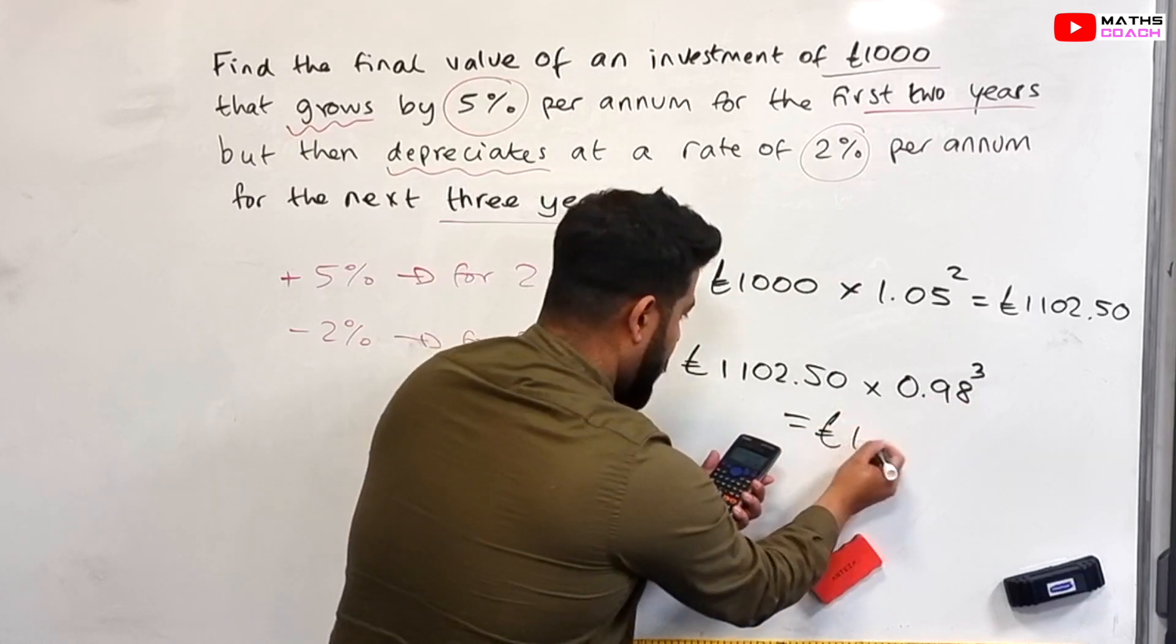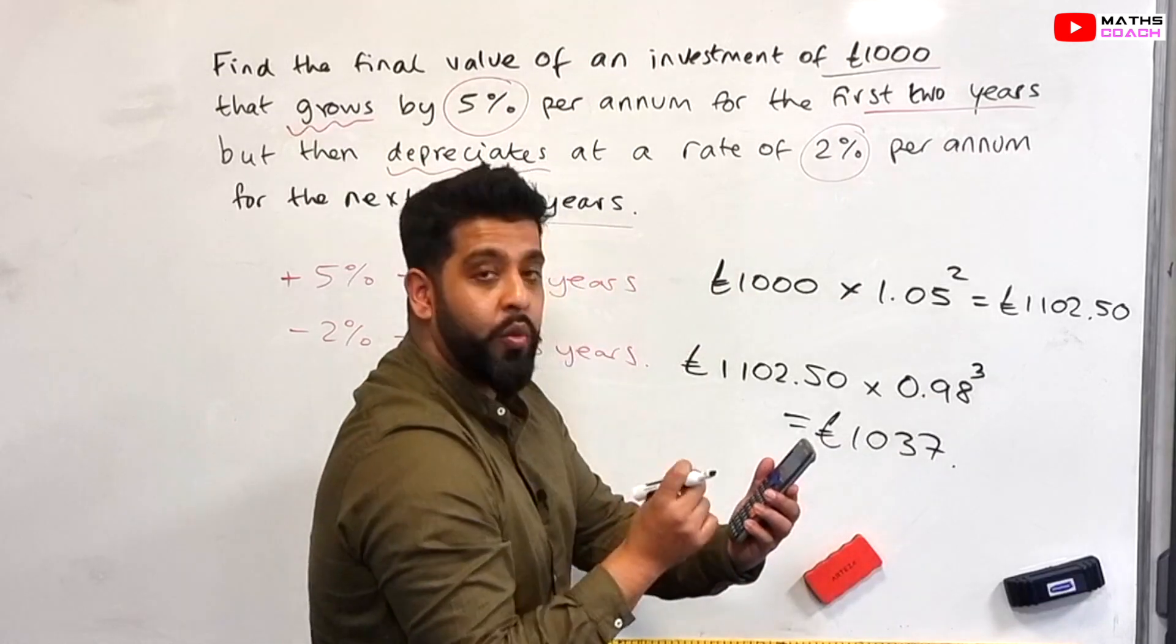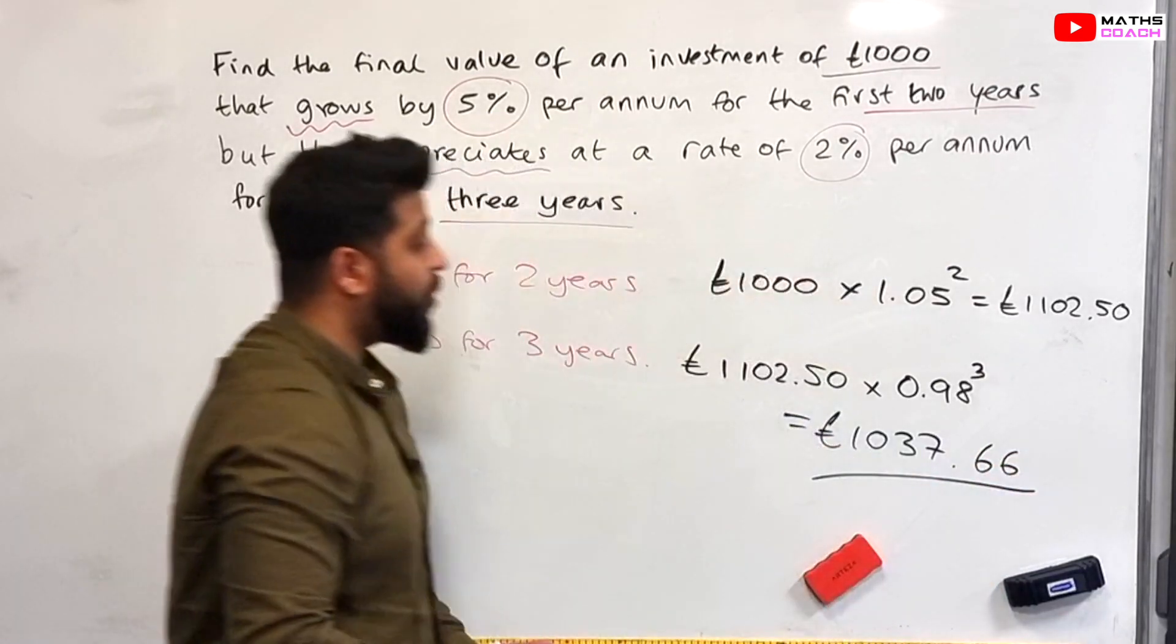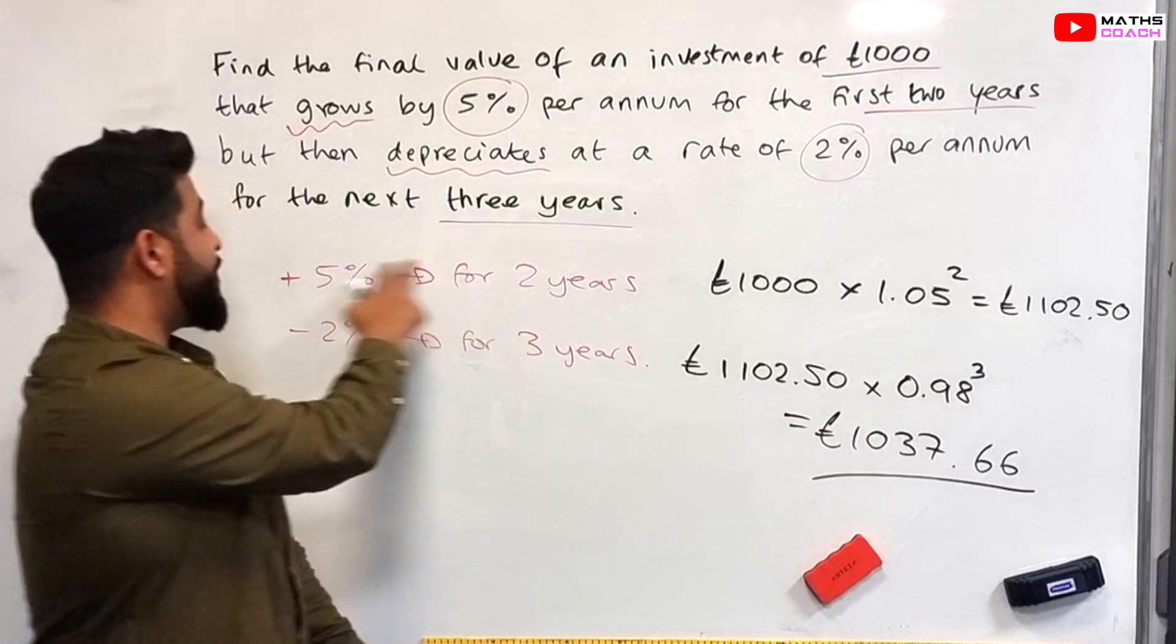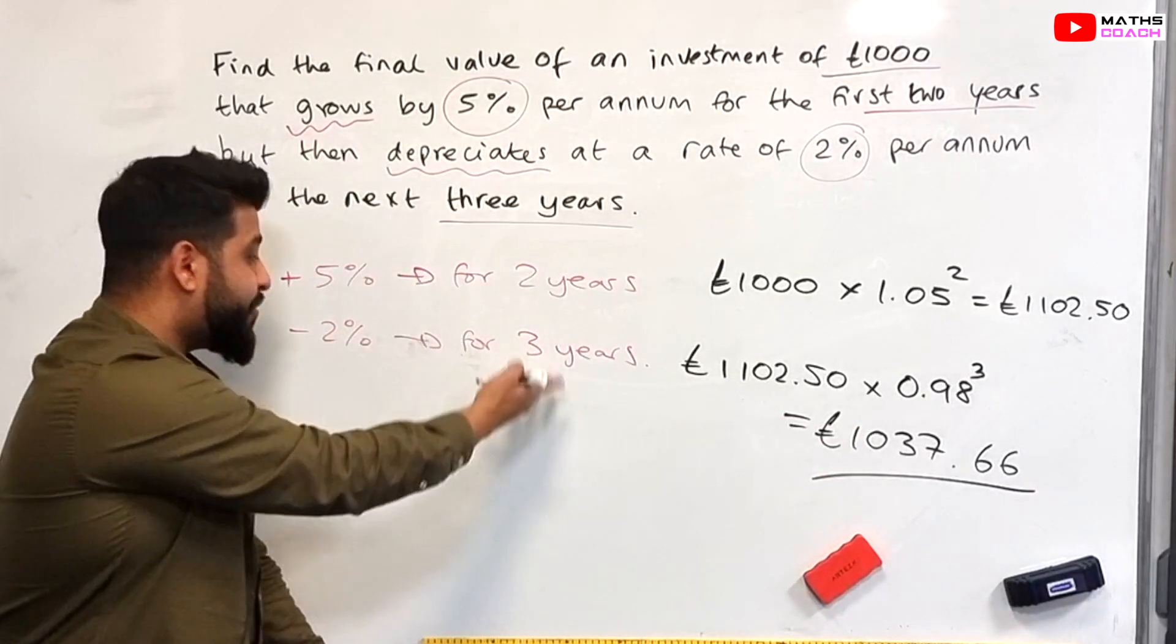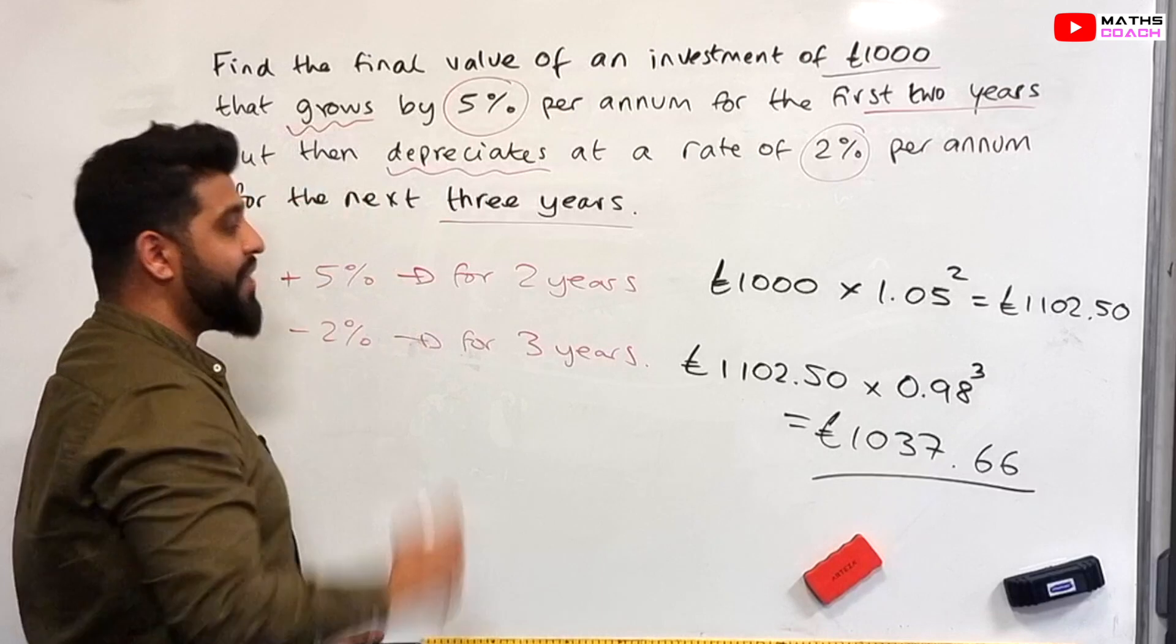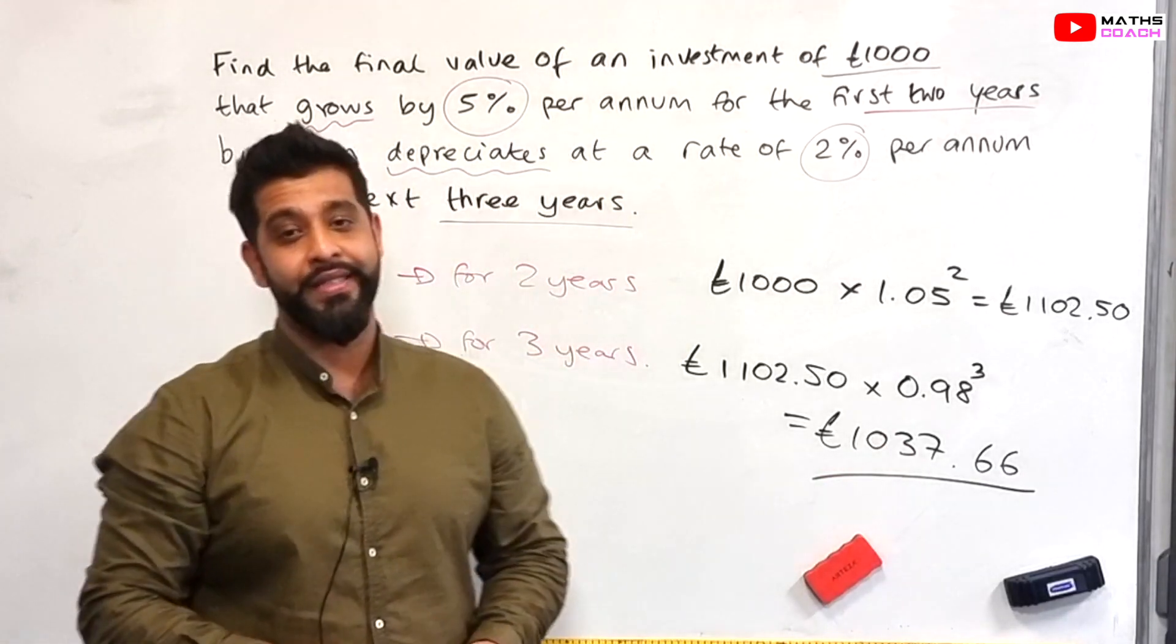Once again go into your calculators and our final answer for this is £1,037.66418. So if you round this appropriately to two decimal places you get £1,037.66. So this is the value of your investment after the first two years where you are enjoying 5% per annum and then for the next three years you are suffering a loss of 2%. So after investing £1,000 into your account at the end of five years you have £1,037.66.